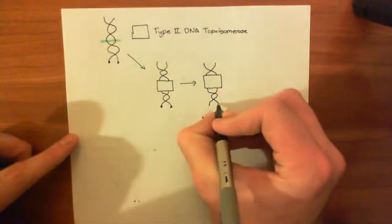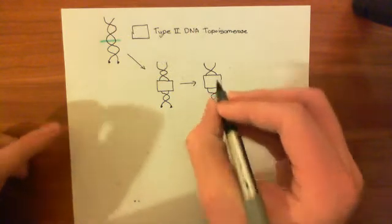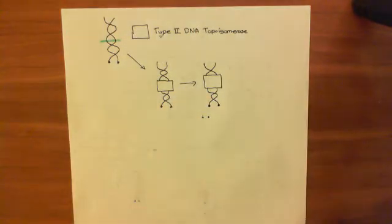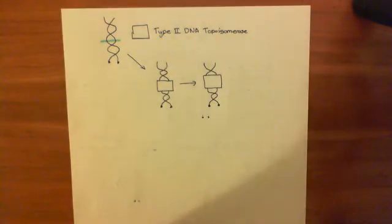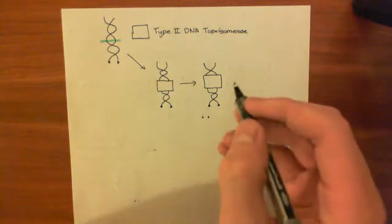So this enzyme's linker number is negative 1, i.e. it's removed a single twist. Some of them may remove more twists, i.e. their linker numbers may be minus 2, minus 3. Some of them may even add twists or coils.